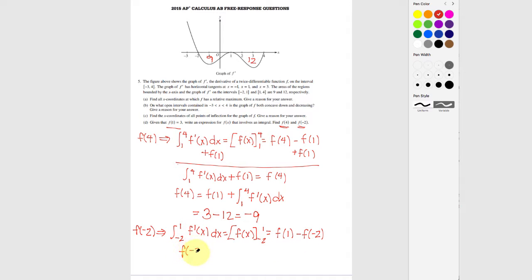So scoot the f of negative 2 over here, and then put this on this side. So I have f of 1 minus the integral from negative 2 to 1 of f prime of x dx.